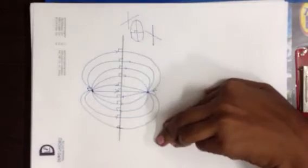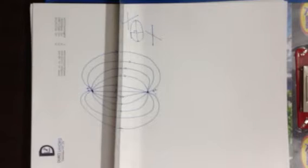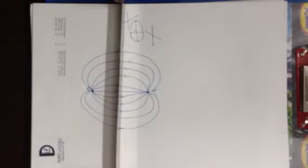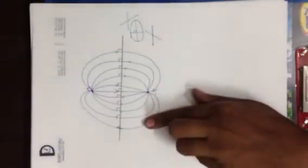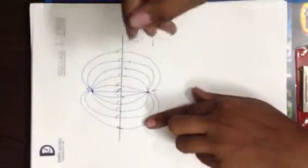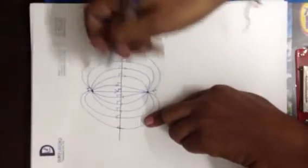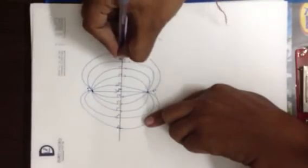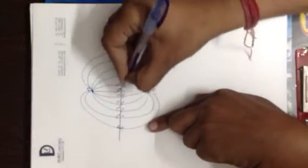So if I introduce a conducting sheet in between, the field lines will not change. It is a very thin conducting sheet, and field lines change themselves to cut the surface of a conductor normally. But because of symmetry, they are already cutting this normally. So the field lines will not change. A negative charge will be induced on one side of the conducting sheet and a positive charge on the other side.